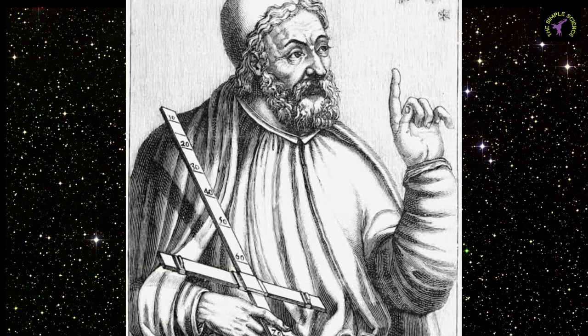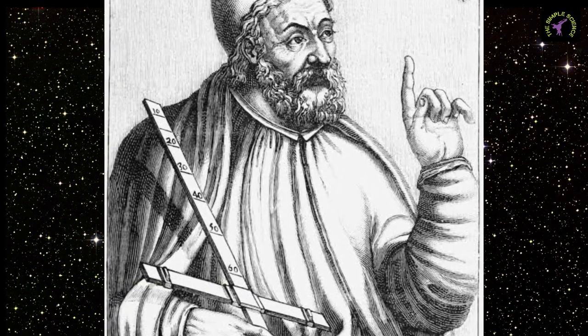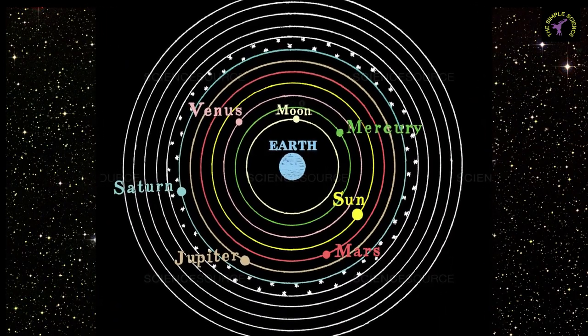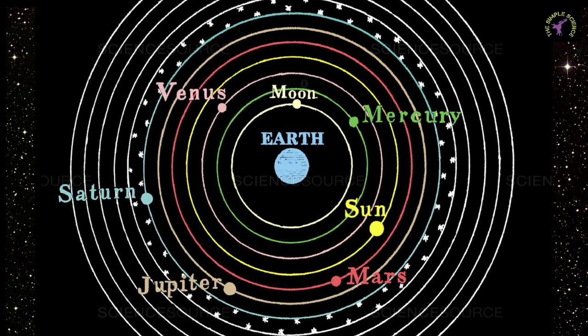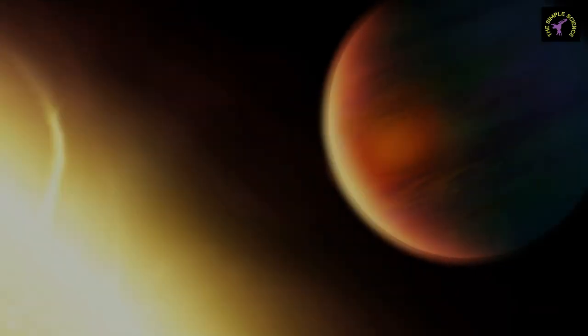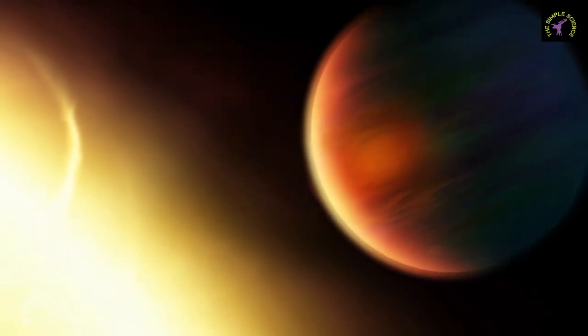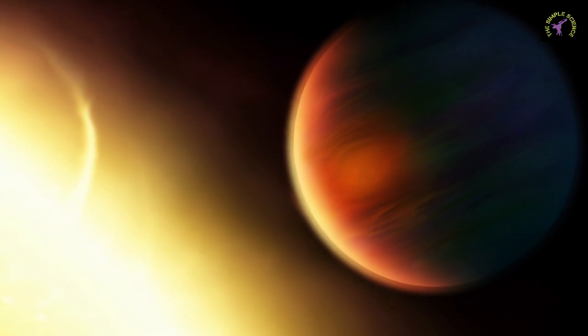Ptolemy in the 2nd century put forward a complete cosmological model. Earth stood at the center, surrounded by eight spheres that carried the moon, the sun, the stars, and the five planets known at that time: Mercury, Venus, Mars, Jupiter, and Saturn.